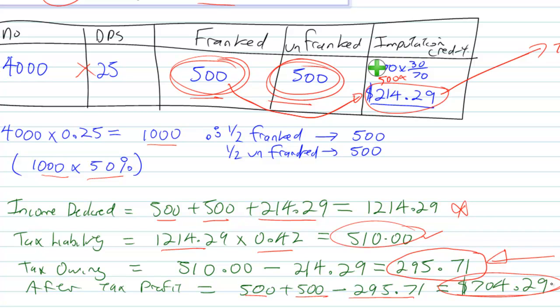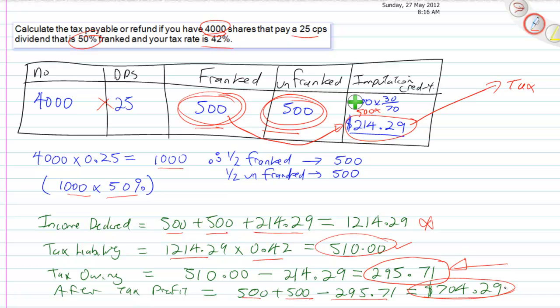Okay, so that's the two ways that you do the dividend imputation credits, and how much money you owe, and that you have to either give to the tax man, or they refund to you. So in both of these examples, you've had to pay more because your tax rate was 42%, which is higher than the 30% tax rate that the company is paying on your behalf. Thank you.